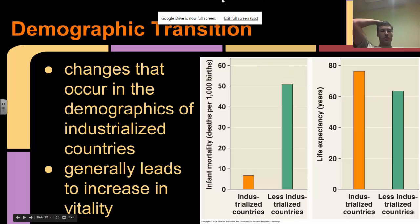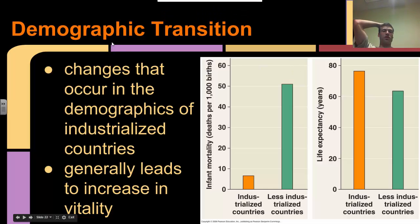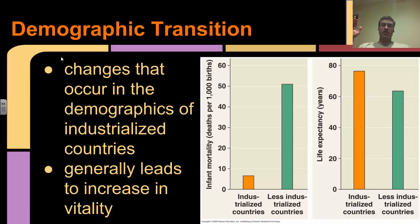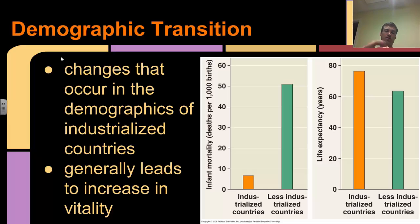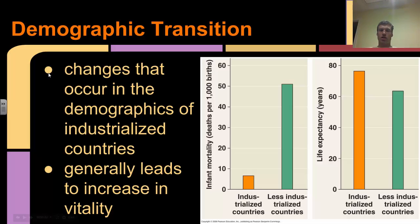One of the trends we see in industrialized countries is what is known as the demographic transition - changes that occur in the demographics of industrialized countries. It generally leads to an increase in vitality: industrialized countries have much lower infant mortality rates, meaning more infants survive, so people tend to have fewer babies. You also have a much longer life expectancy in industrialized countries, which obviously puts different strains on your system.